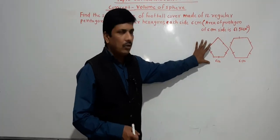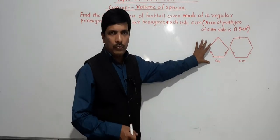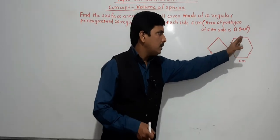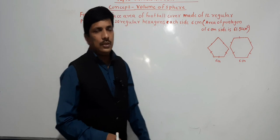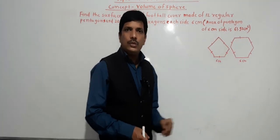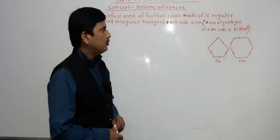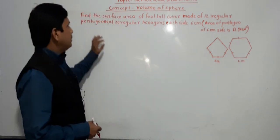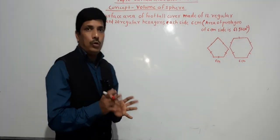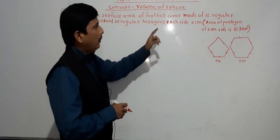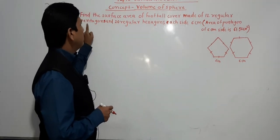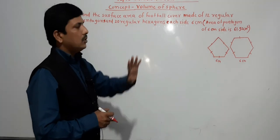Pentagon means a 5-sided closed figure, and hexagon means a 6-sided closed figure. The side of both pentagon and hexagon is the same: 6 cm. We have to find the surface area of the football, which is made of 12 regular pentagons and 20 regular hexagons. Regular means equiangular and equal-sided.